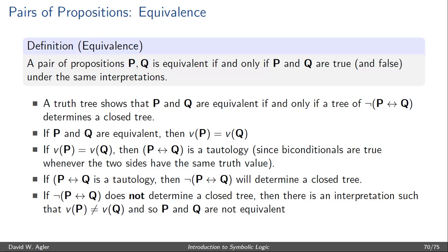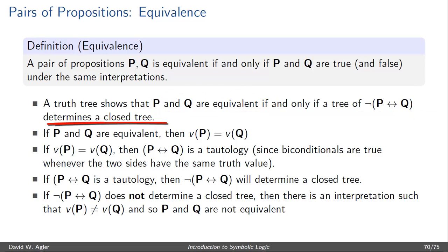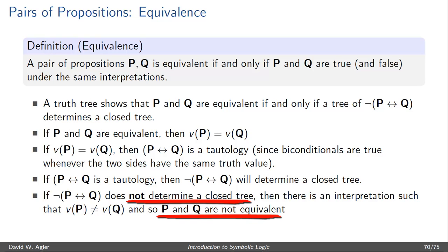There'll be a situation where perhaps P is true and Q is false, or P is false and Q is true. So in short, in order to test two formulas P and Q to see if they're equivalent, we simply write the formula not P double arrow Q in a truth tree. If the truth tree once decomposed yields a closed tree, then P and Q are equivalent. If it yields a completed open tree, then P and Q are not equivalent.